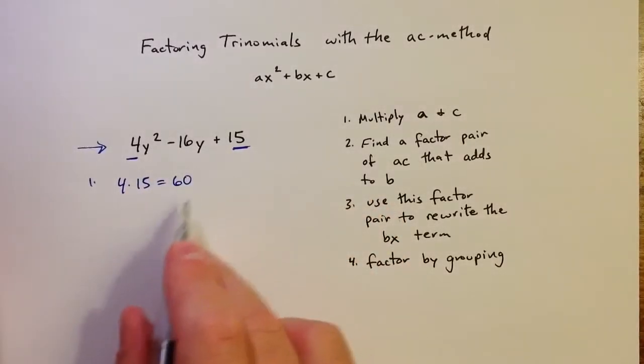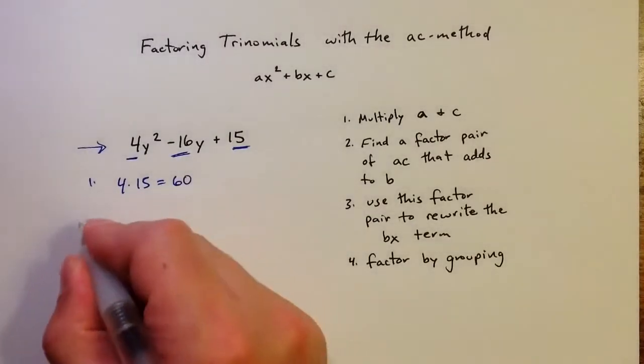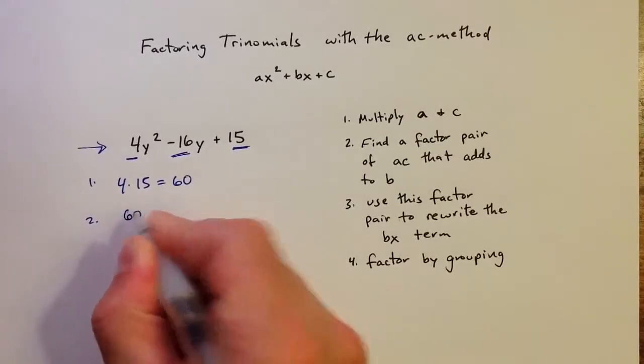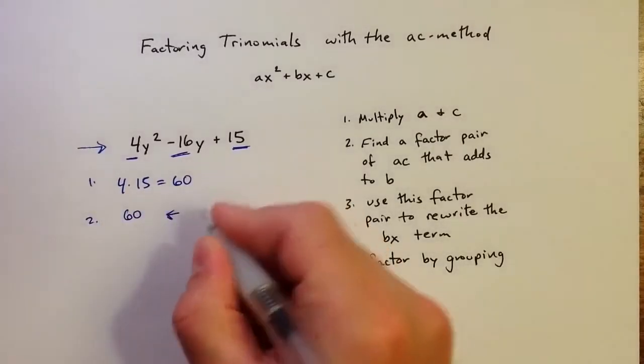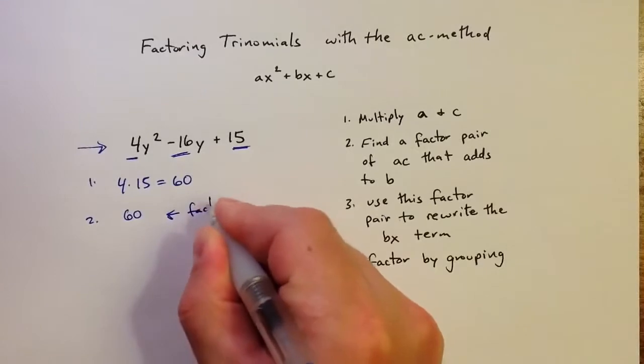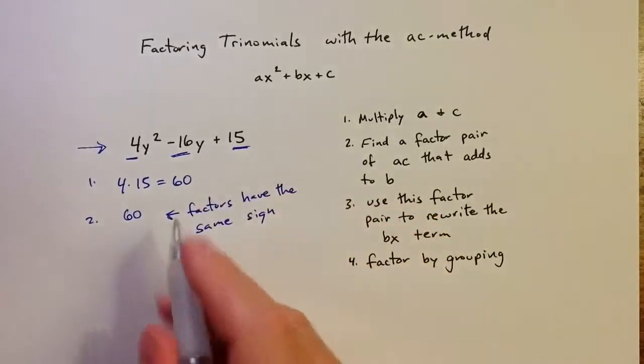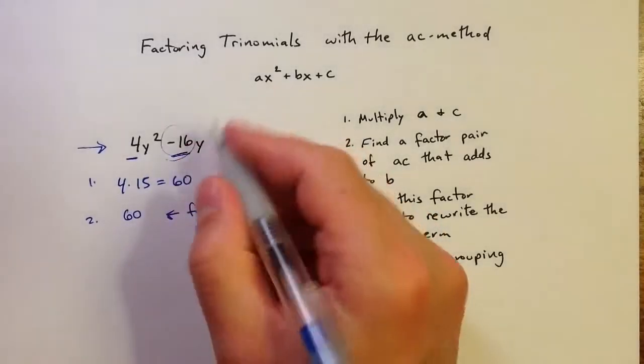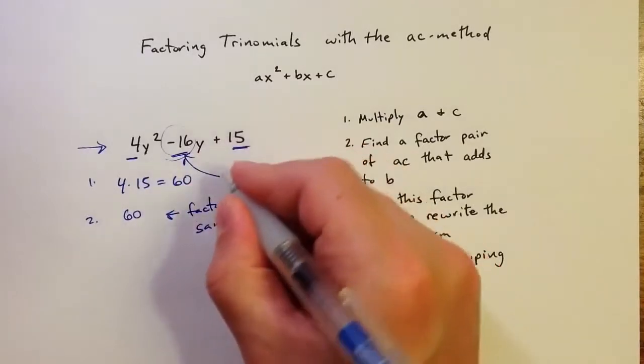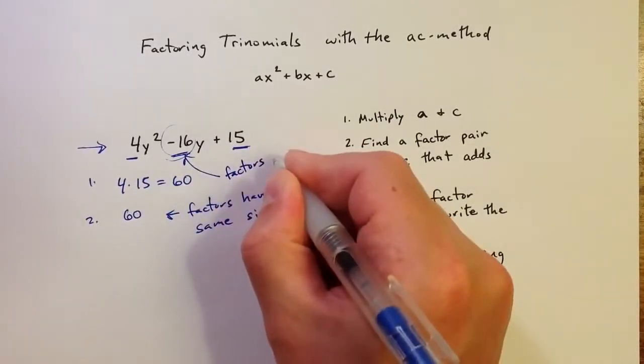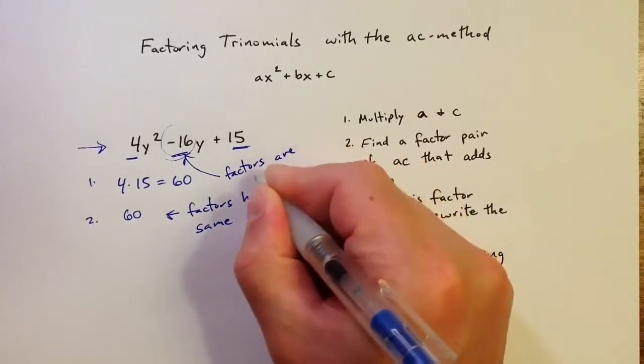And then I want to find a factor pair of positive 60 that adds to equal the value of b. So I want to find a factor pair of positive 60 that adds to equal negative 16. Because 60 is positive, I know that the two factors have to have the same sign. And because 16 is negative, it tells me that that sign is going to be negative.